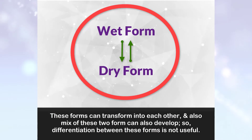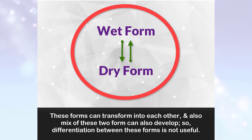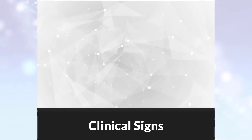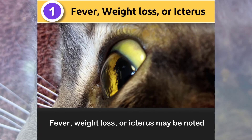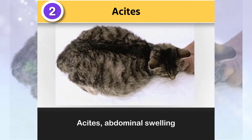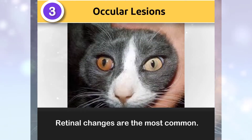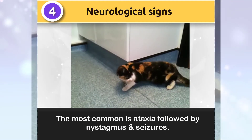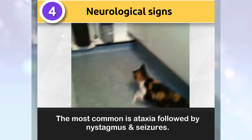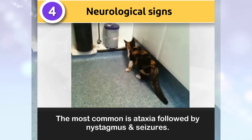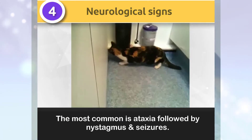Differentiation between these forms is not useful. Clinical signs of FIP include: number 1, fever, weight loss, or icterus may be noticed; number 2, ascites and abdominal swelling; number 3, ocular lesions — retinal changes are the most common; number 4, neurological signs — the most common is ataxia, followed by nystagmus and seizures.